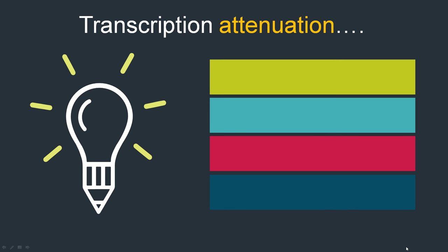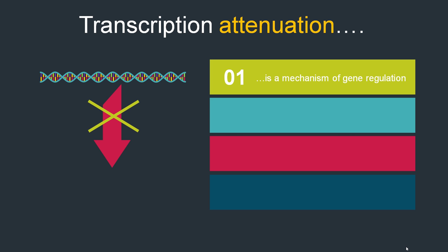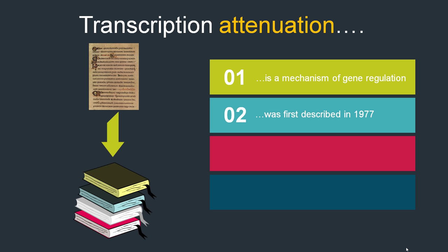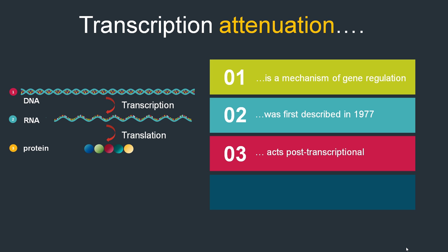So what is attenuation? Attenuation, or more precisely transcription attenuation, is a gene regulation mechanism in bacteria. It was already described in 1977, so over 40 years ago, and since it was one of the most impactful examples of gene regulation in bacteria, we still find it in basically every biological textbook. Attenuation acts on a post-transcriptional level, meaning it's not directly targeting DNA, but instead regulating on RNA level.